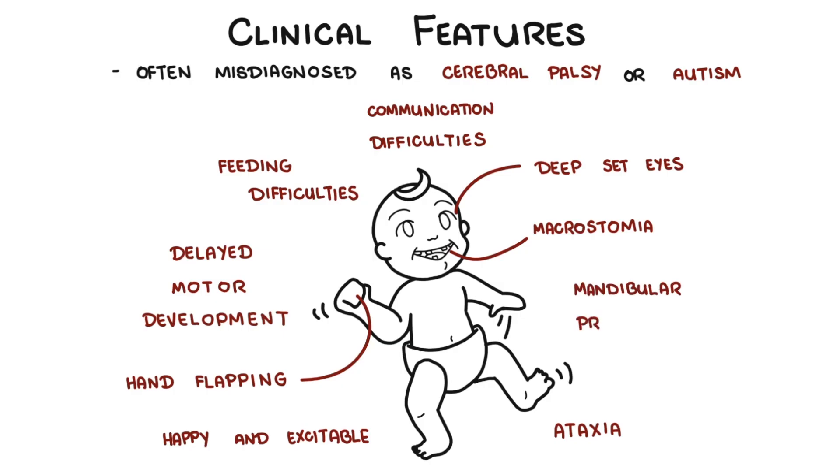Adults may have mandibular prognathism, a prominent lower jaw. People with Angelman syndrome have a fascination with water, a love for music, and attraction to shiny objects. They can also be sensitive to heat, and most have disruptive sleep cycles.